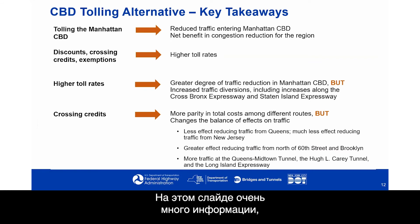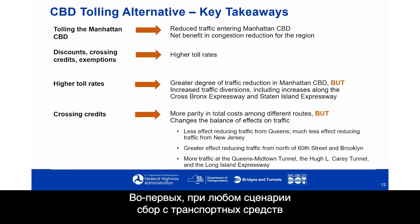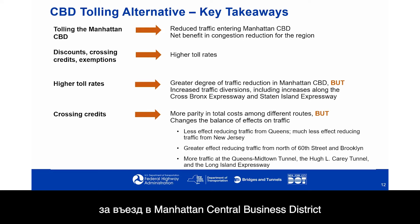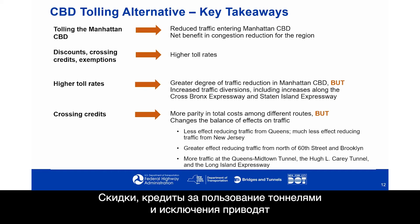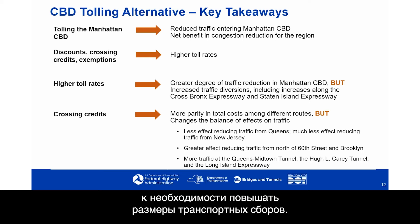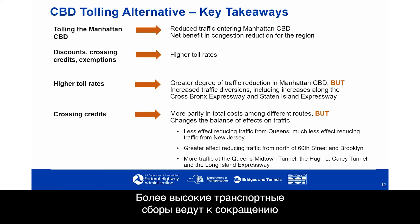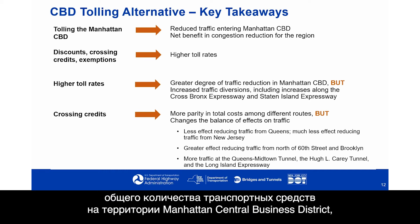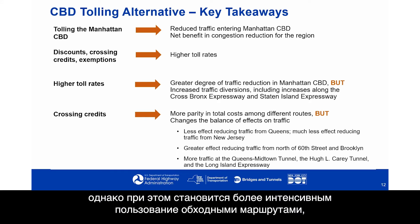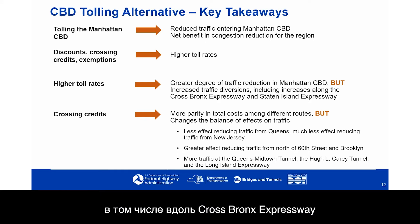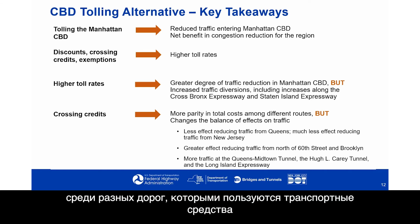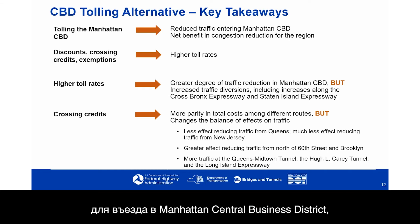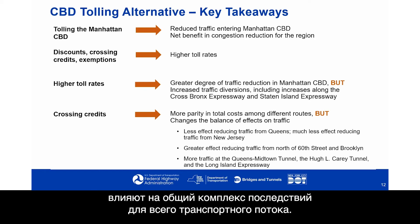Key takeaways: tolling the Manhattan CBD in all scenarios reduces traffic entering the district and results in a net congestion reduction benefit for the region. Discounts, crossing credits, and exemptions result in the need for higher toll rates. Higher toll rates lead to a greater degree of traffic reduction in the CBD, but also lead to increased traffic diversions, including increases along the Cross Bronx Expressway and the Staten Island Expressway. Crossing credits lead to more parity in total cost among different routes.